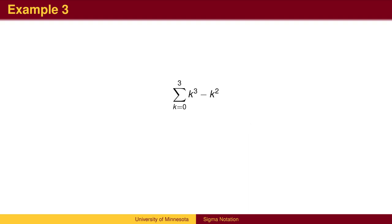Here is an example for you to try. Start by plugging in k equals 0 into the formula, then k equals 1, and so on until k equals 3. Then add the terms together. You may wish to pause the video at this point to work out this problem. The sum of the four numbers is 22.